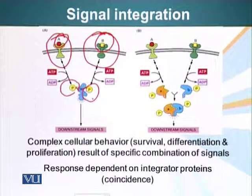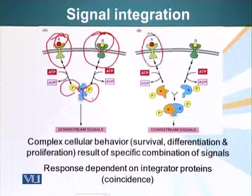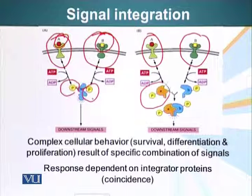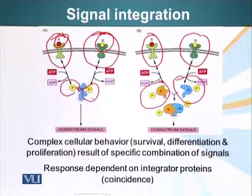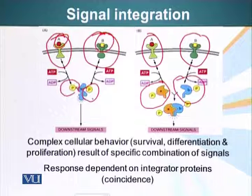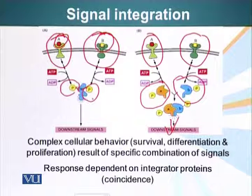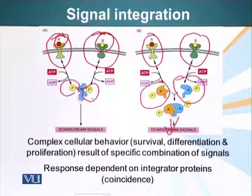Another way this can be accomplished: two receptors, upon ligand binding, result in phosphorylation of two separate proteins. After these two proteins have a phosphate group attached, they undergo a conformational change and can bind each other to convey the signal downstream. These are two ways cells can regulate proliferation by having a signal integration mechanism.